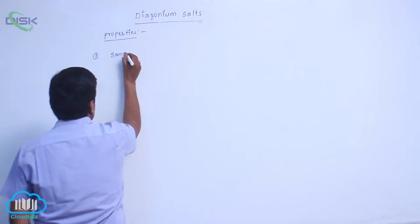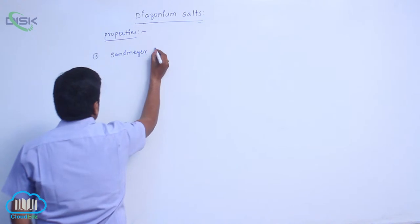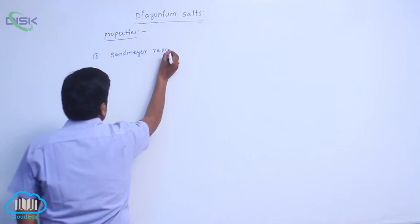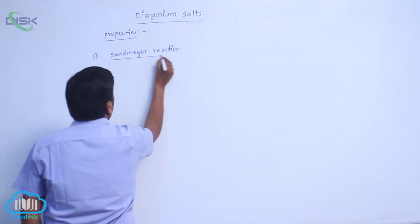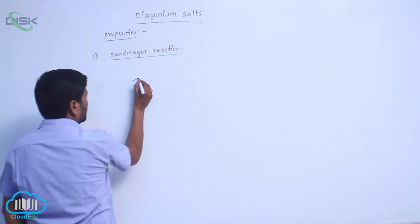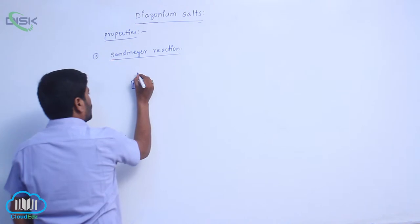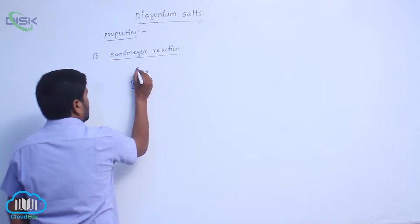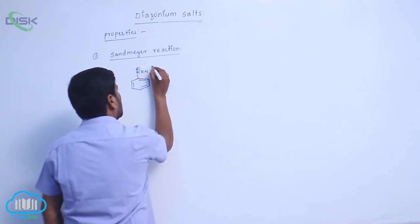Sandmeyer Reaction. We start with benzene diazonium chloride: N triple bond N with positive charge, and Cl minus.